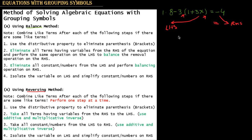Opening the bracket, you get 8 minus 3 — where 3 multiplied by 1 is 3, and 3 multiplied by 3X gives minus 9X — equals minus 4.